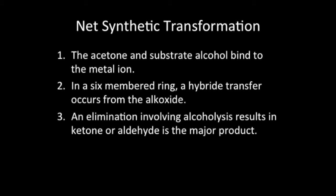In the net synthetic transformation, the acetone and substrate alcohol bind to the metal ion. This forms a six-membered ring, and a hydride transfer occurs from the alkoxide. An elimination involving alcoholysis results in a ketone or aldehyde as the major product.